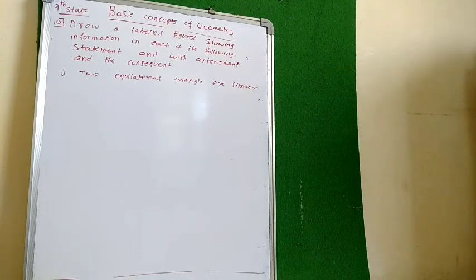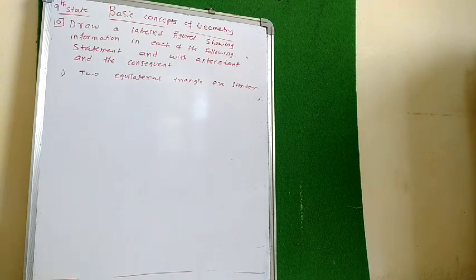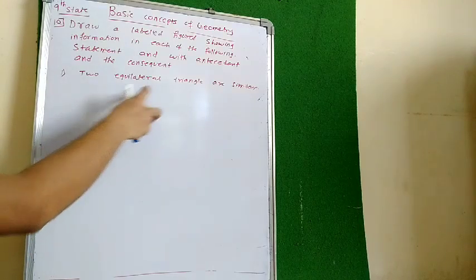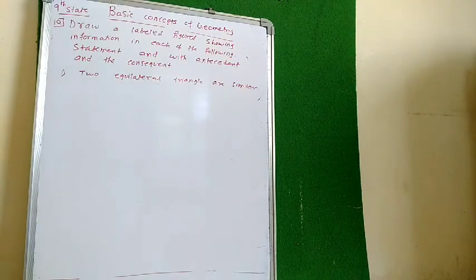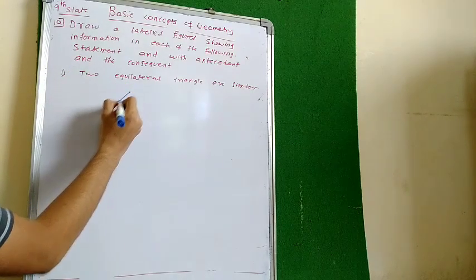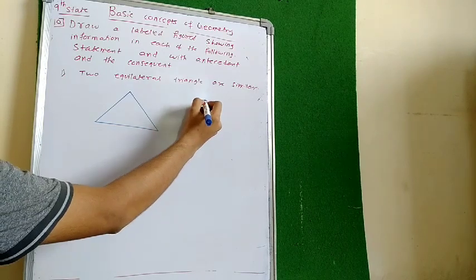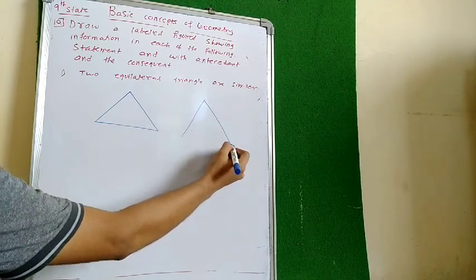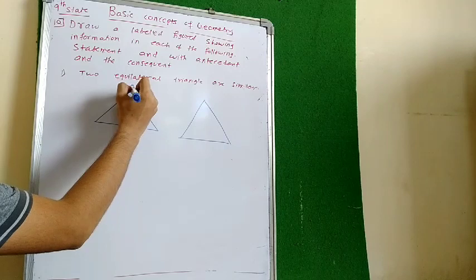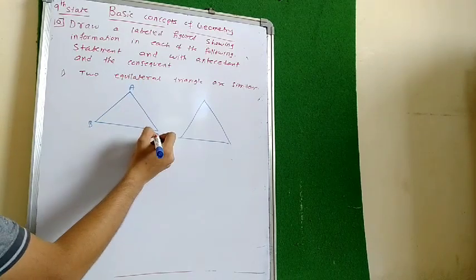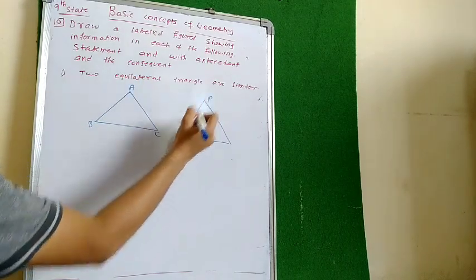In the tenth question, draw a labeled figure showing the information in each of the following statements, along with the antecedent and consequent. So we need to write the diagram and write the given part and part to be proved. Two equilateral triangles — so I will draw two triangles, naming them ABC and PQR.